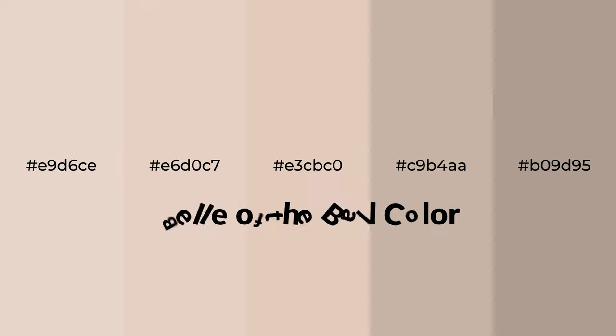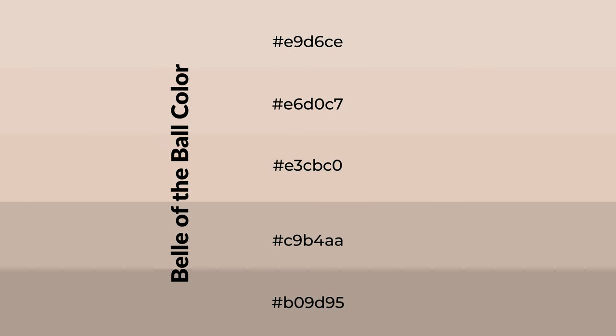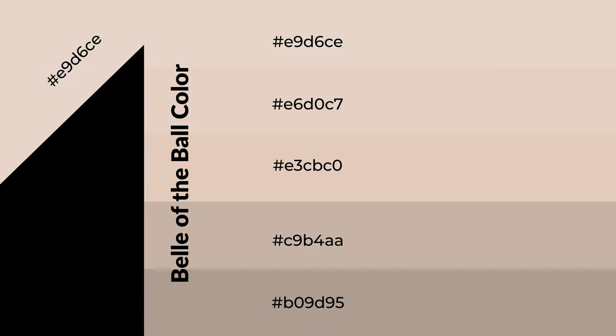Warm shades of Bell of the Ball color with orange hue for your next project. To generate tints of a color, we add white to the color — tints create light and exquisite emotions. To generate shades of a color, we add black to the color, and it is used in patterns and 3D effects.